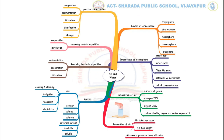Here is the mind map and the topic: Air and Water. Air and Water are the two most vital requirements for life on the earth. Living beings breathe in air to survive. Plants also use air for photosynthesis and respiration.